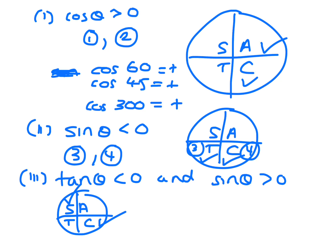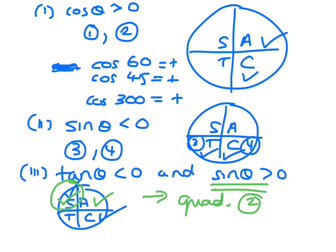That's where tan is negative. And where is sine positive? Quadrant 2 and quadrant 1. So where does this happen together? They both happen in quadrant 2.